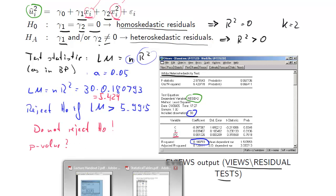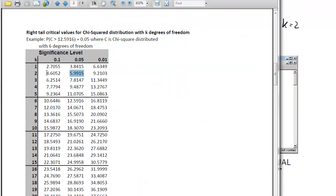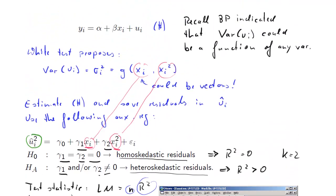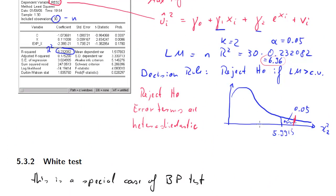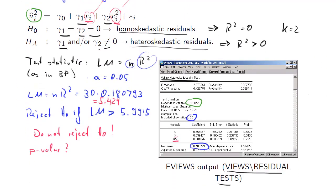Before we conclude, let's quickly look at the p-value by going to the chi-squared table. We're interested in the k equals 2 row. Our test statistic is between the critical value for 10% and the critical value for 5%. So our test statistic is somewhere between those two critical values. The p-value, represented by the area underneath the distribution to the right, is larger than 0.05. The 10% critical value was 4.60, so the p-value is somewhere between 5% and 10%.